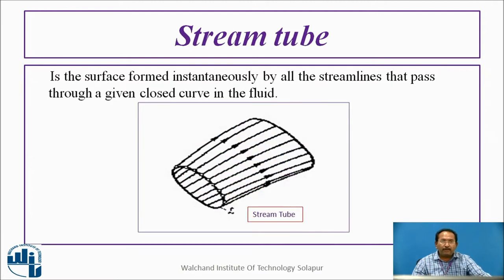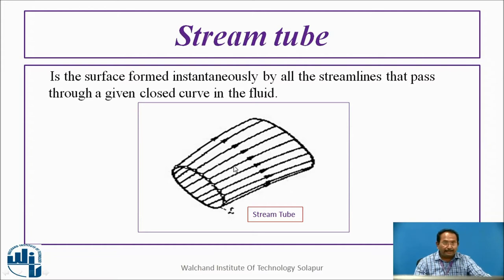A stream tube is the surface formed instantaneously by all the stream lines. These are the stream lines, and this is the stream tube — you can think of it as a cross-section taken in a pipe. All these are the stream lines forming the stream tube.